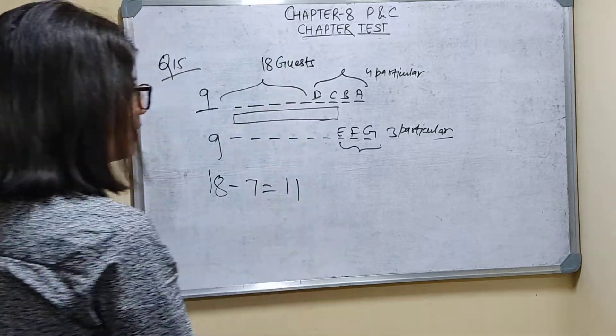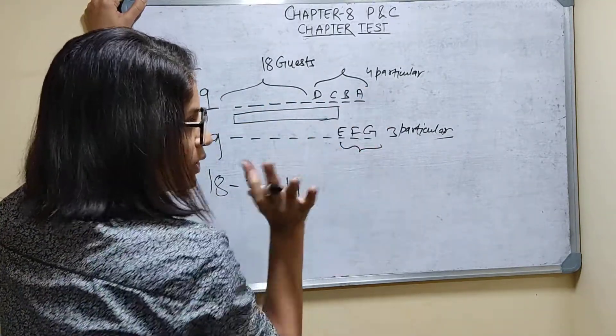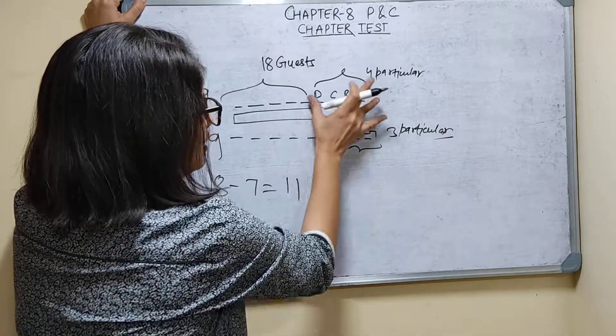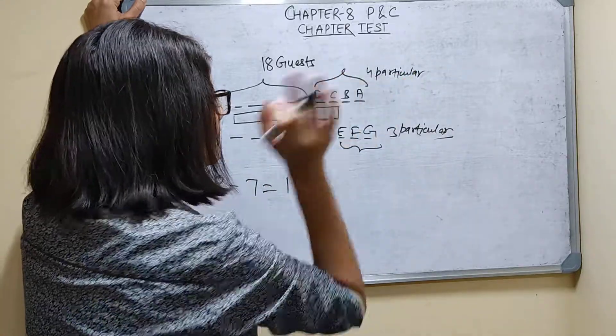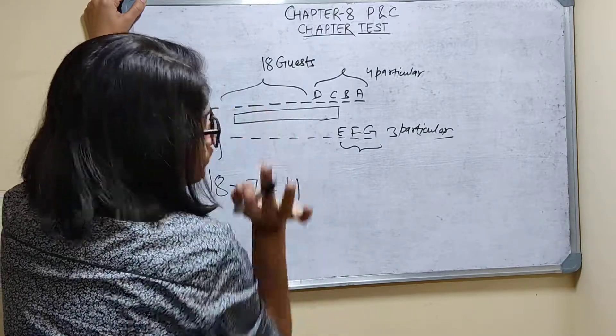So let's make arrangement for this side. These 4 are particular, they will sit here only. These 4 will sit this side, these 3 will sit this side. But in these remaining 5 places and in these remaining 6 places, I will do for this side.